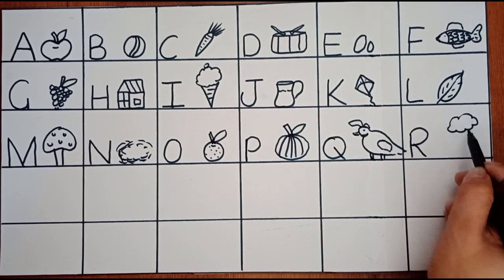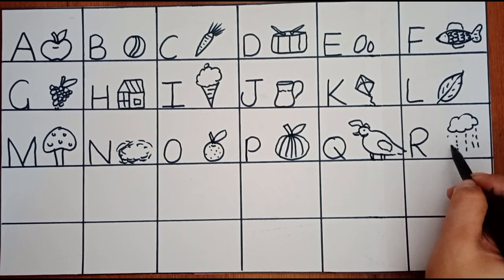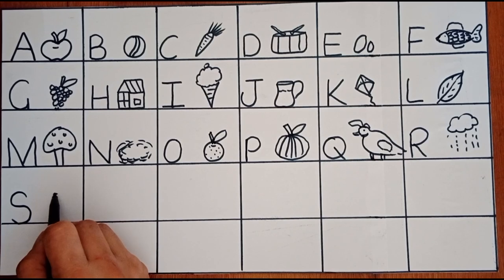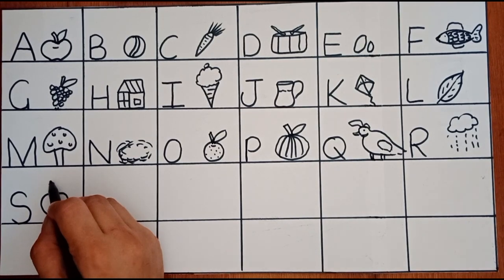R for rain. R, R for rain. Now I know my ABCs. Next time won't you sing with me. S, S for strawberry.